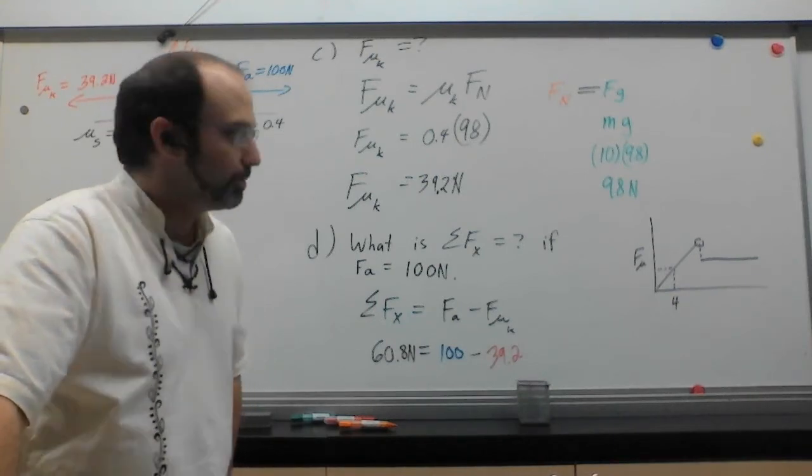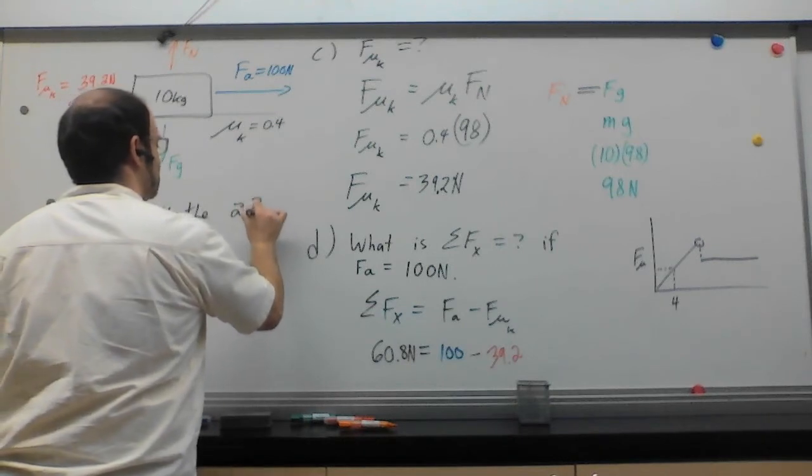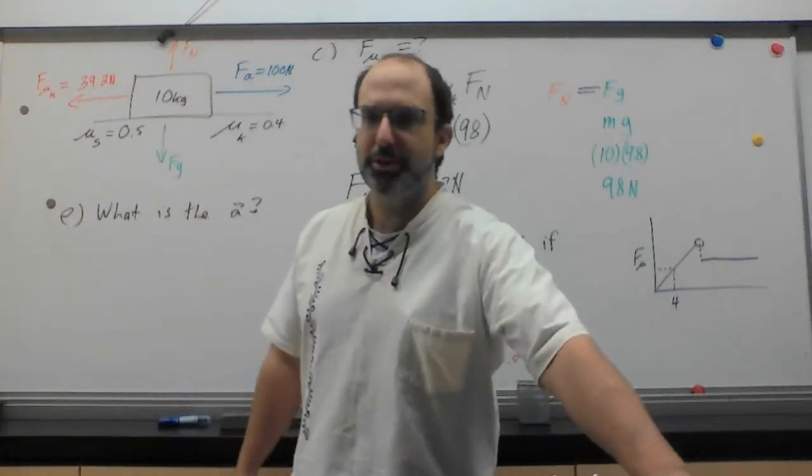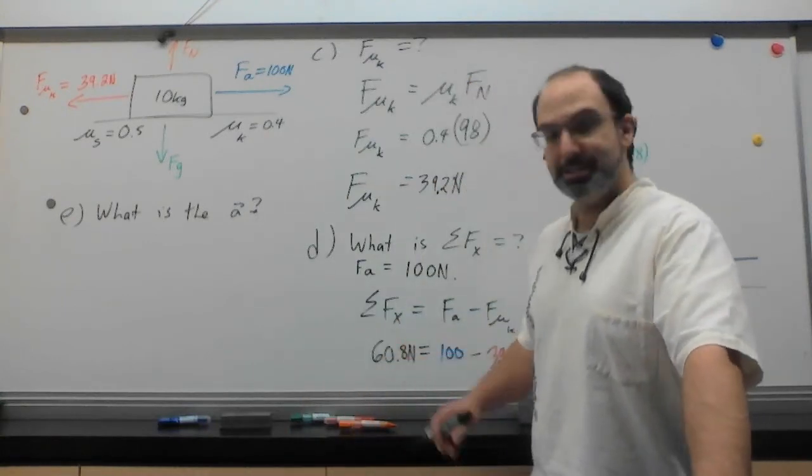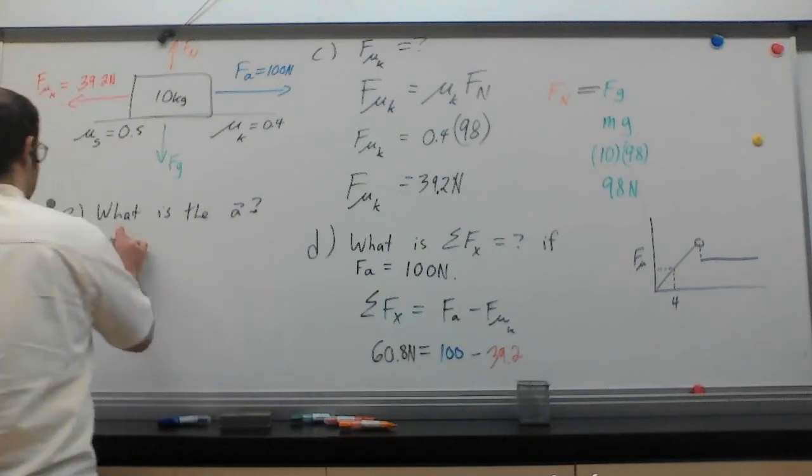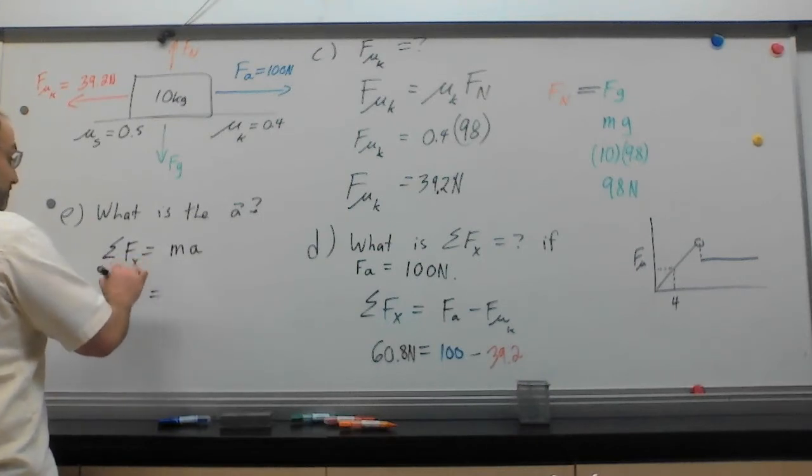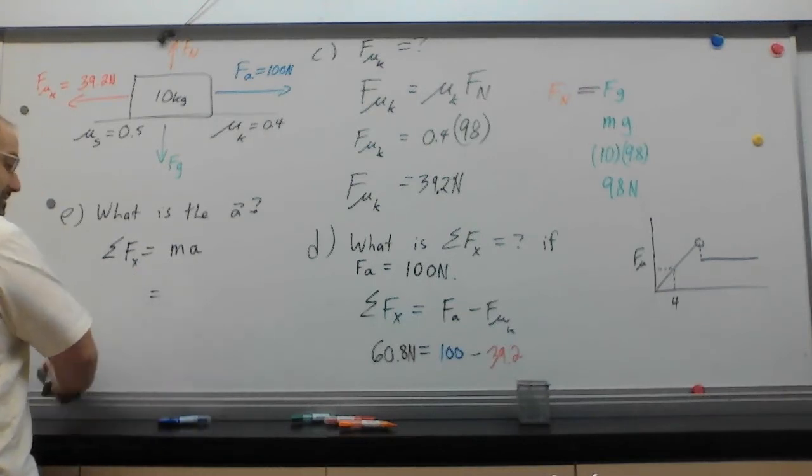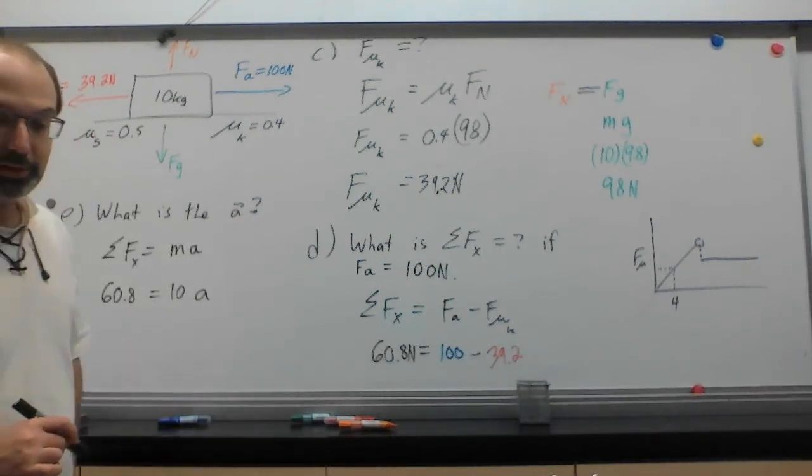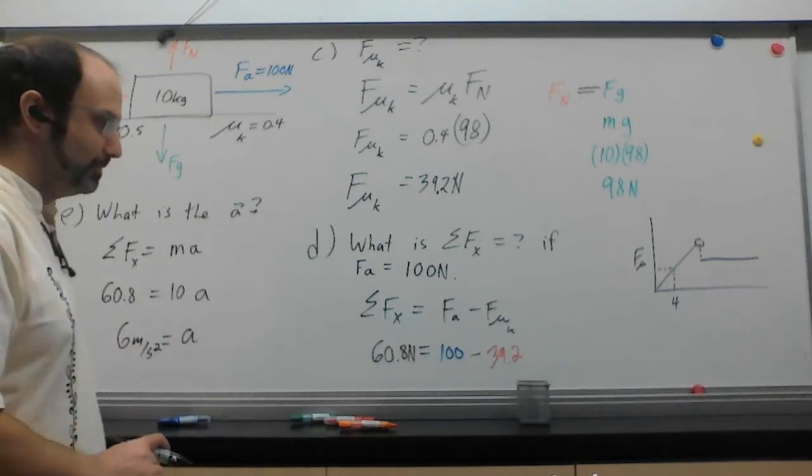So this is going to be F_A minus F_mu, specifically mu k. We then fit in our numbers. We already calculated that it's 39.2, and we already know that the force applied is going to be 100. So we subtract them. We take 100 and we subtract 39 and we're going to get about 60.8. And there you go. That's our answer for that. That's how much force is in total acting on this thing. There's the force that I'm applying, and there's the friction taking that force away, removing it from the whole system. We're almost done. We've only got one more example we're going to do. E. What is the acceleration of this particular object?